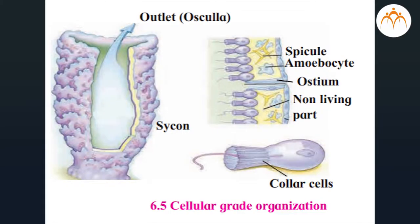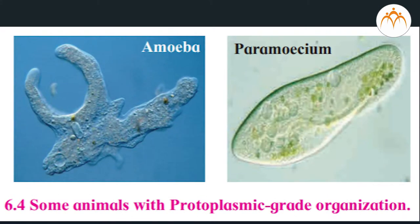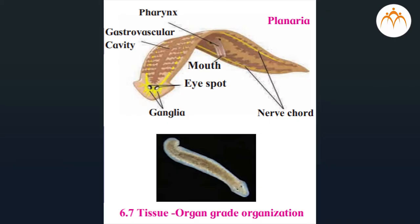In the first step of classification, grades of organization are considered. Body organization of unicellular animals is called protoplasmic grade organization. In case of multicellular animals, there can be cellular grade, cell-tissue grade, or tissue-organ grade organizations.